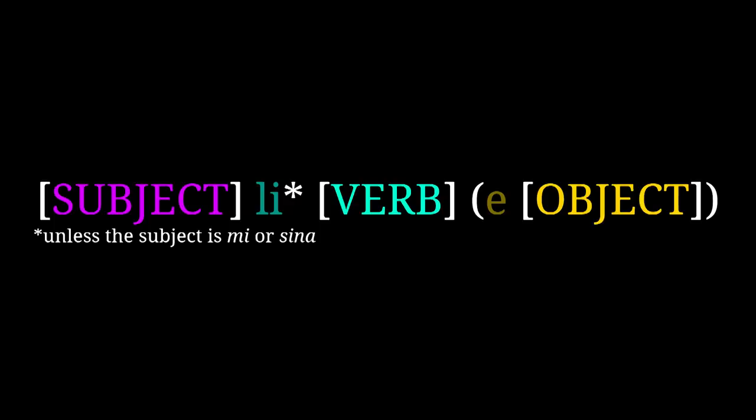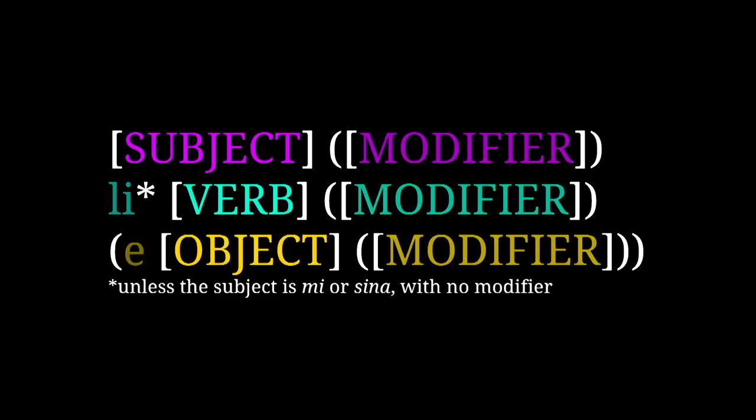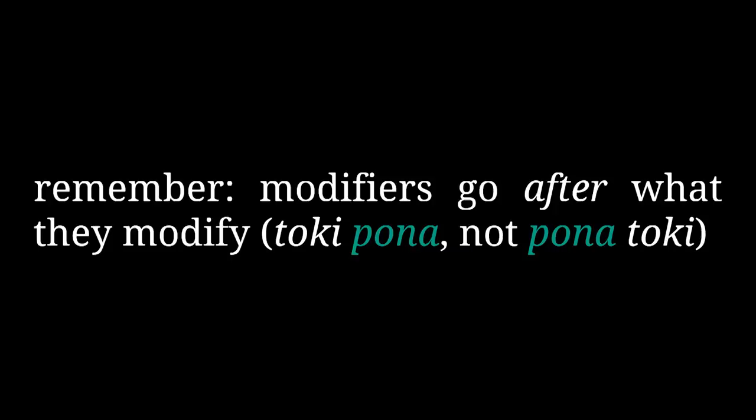Even though the word order in this language is very strict—you always have the subject before the verb and the verb before the object—you still need these grammatical particles to mark where each part begins, because otherwise it would be super unclear how you're supposed to parse something like 'yan moku telo.' As we learned in the previous lesson, Toki Pona uses modifiers like adjectives to express many concepts that would be a single word in most languages. Remember, modifiers come after the words they're describing. It's Toki Pona, not Pona Toki. Using li and e properly helps clarify the difference between the different parts of your sentence and single noun or verb phrases.